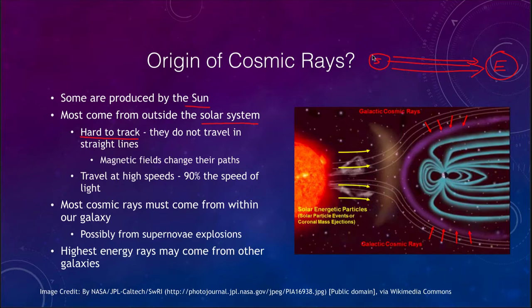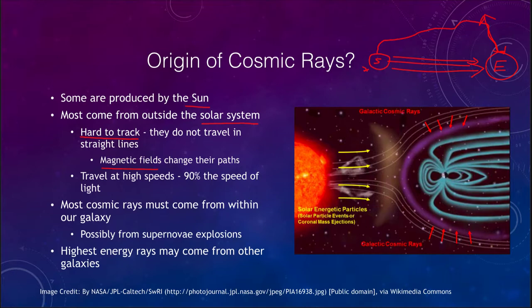However, cosmic ray particles will travel along the magnetic field, so they can follow long, winding paths to get to us here on Earth. Therefore, how do we know where they came from? We may see a particle as coming from one direction, whereas the real source was somewhere entirely different. Magnetic fields can change these paths of particles in a way that they cannot do to electromagnetic radiation.